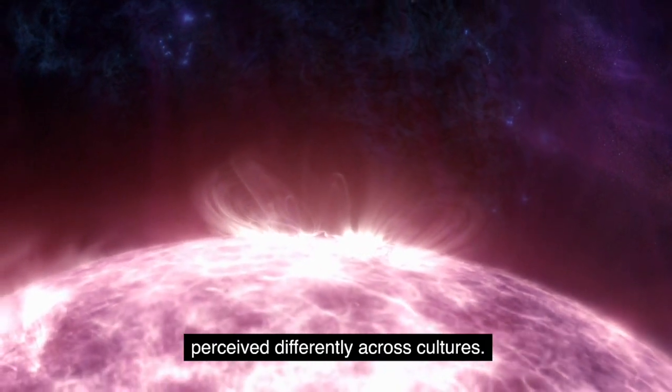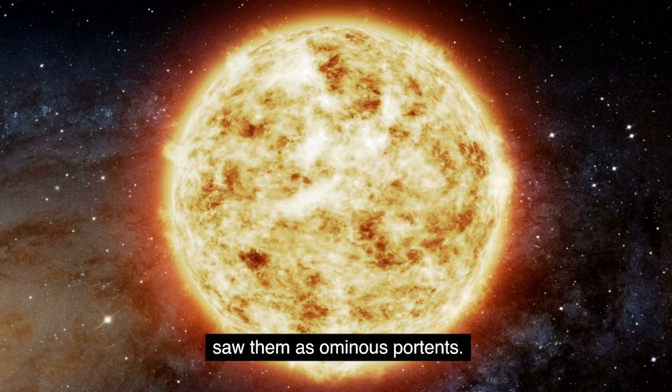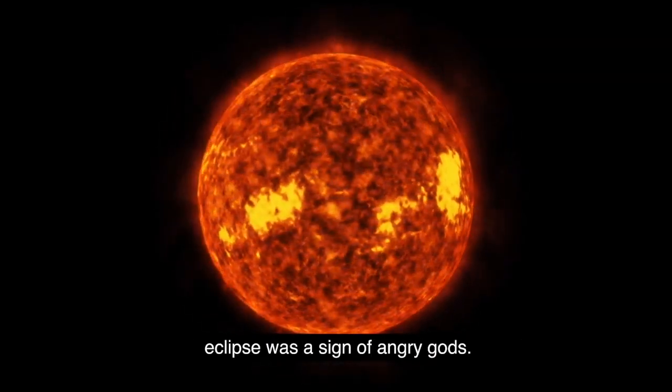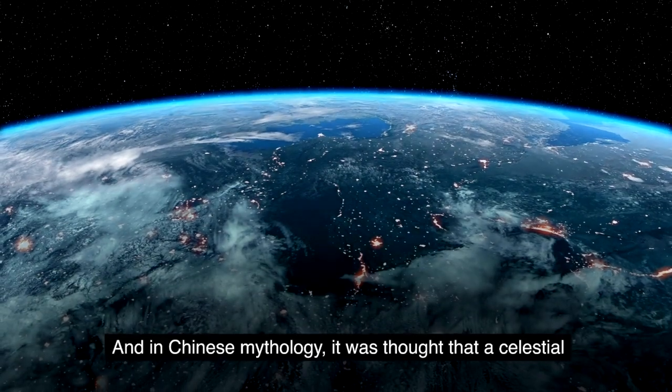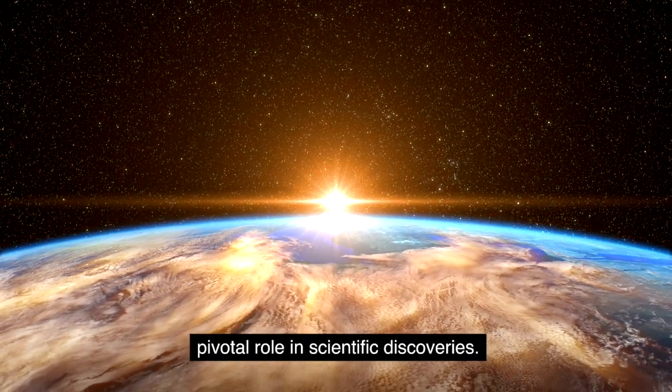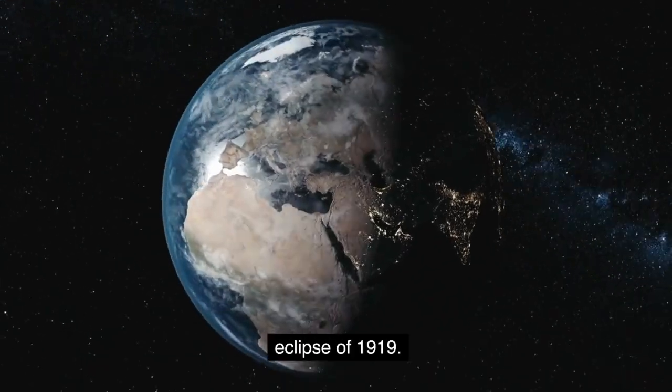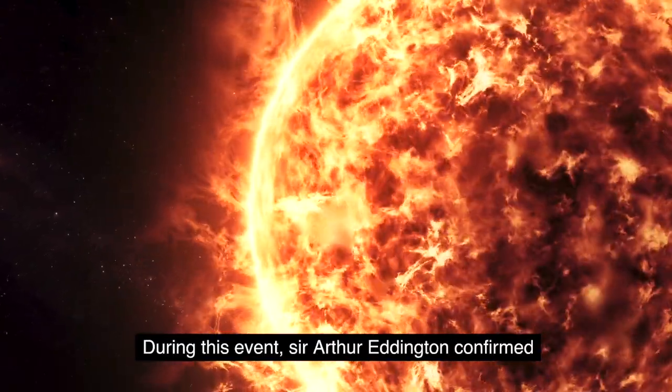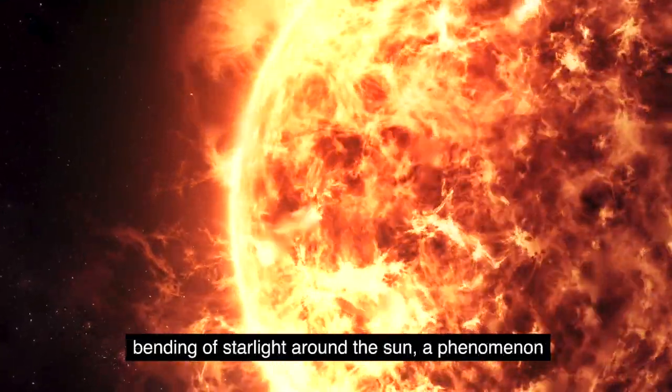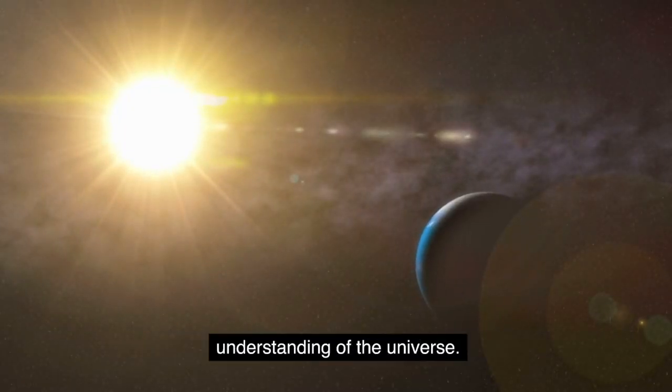Ancient Greeks, for instance, believed that a solar eclipse was a sign of angry gods. And in Chinese mythology, it was thought that a celestial dragon was devouring the sun. Not just a spectacle, solar eclipses have played a pivotal role in scientific discoveries. The most notable example is perhaps the total solar eclipse of 1919. During this event, Sir Arthur Eddington confirmed Einstein's theory of general relativity, by observing the bending of starlight around the sun, a phenomenon known as gravitational lensing. This marked a monumental leap forward in our understanding of the universe.